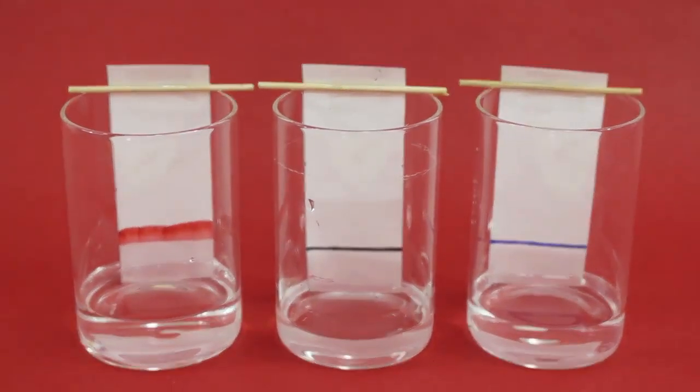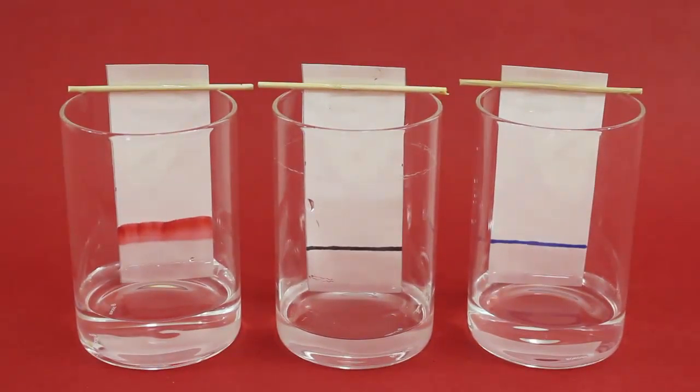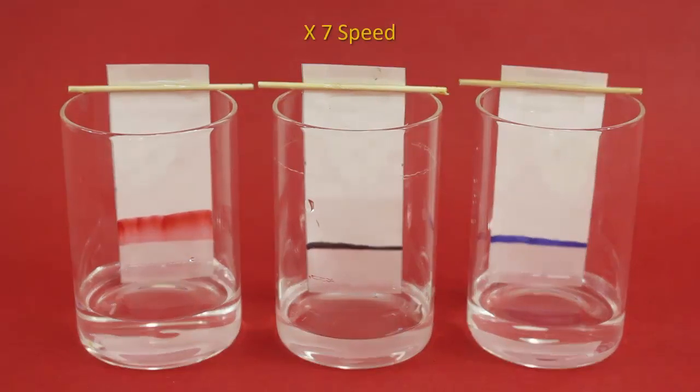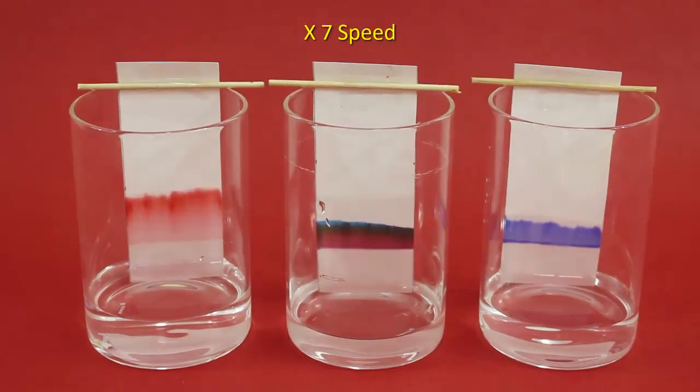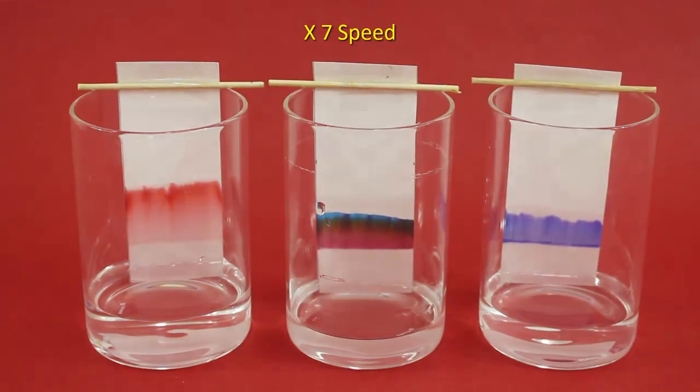Notice the water rising in the filter paper. Filter papers are made of cellulose. Due to the attraction between cellulose and water, capillary action takes place and water climbs up the filter paper.